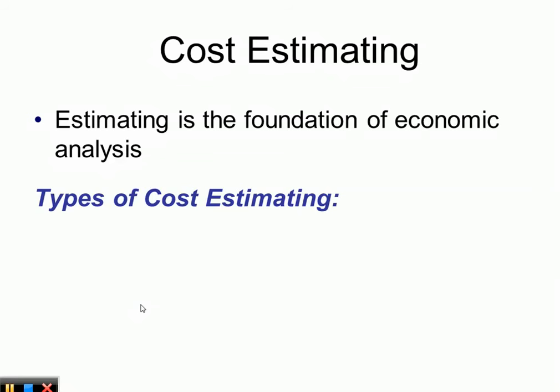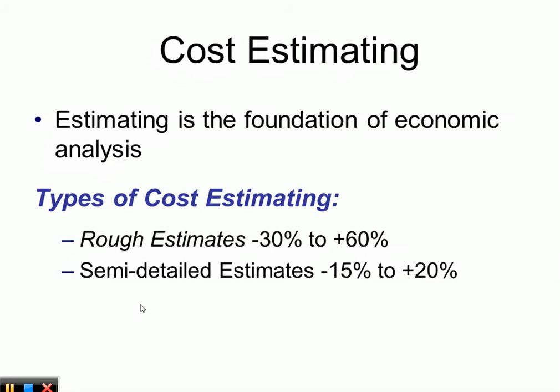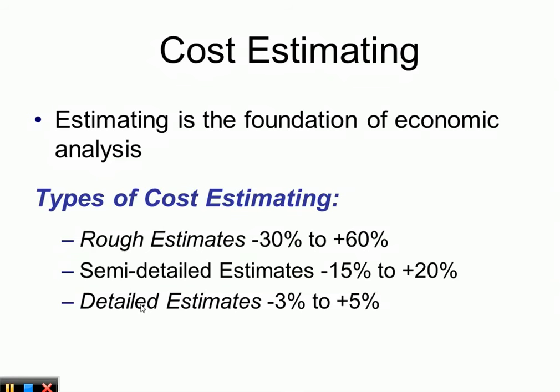There are three different types of cost estimates, and they vary based on accuracy. Rough estimates have error between minus 30% to plus 60%. Semi-detailed estimates have error between negative 15% to plus 20%. Detailed estimates have error from minus 3% to plus 5%. As you can see, the cost could be 60% larger than what you estimated if you're doing rough estimates.